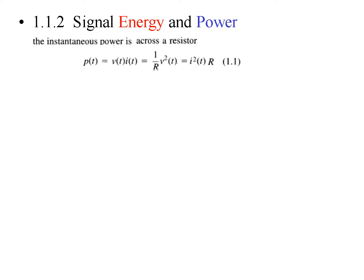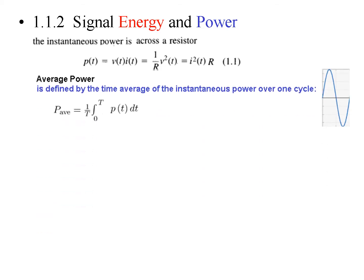We learned in circuit theory that the instantaneous power across a resistor is given by P(t) equal to voltage multiplied by current instantaneous. It can also be written as V squared over R, or as I squared times R. The average power is calculated by taking the integral of the power and dividing by the time period. For a single cycle the time period is T, so we integrate from 0 to T and then take the average.